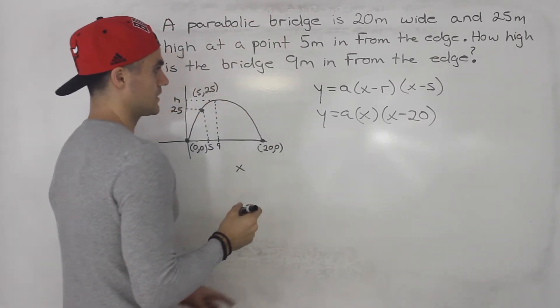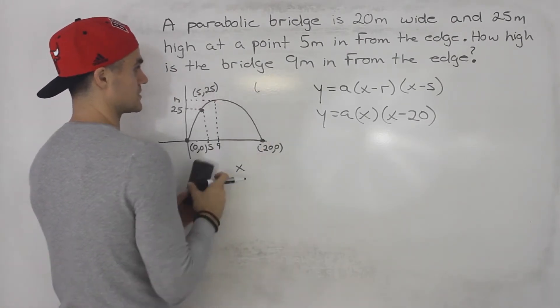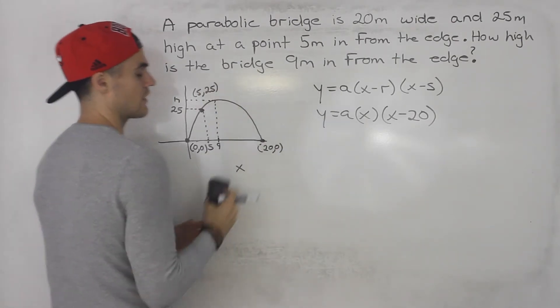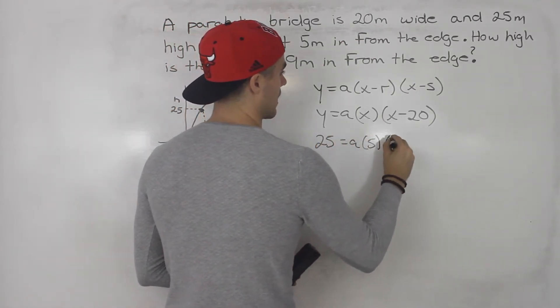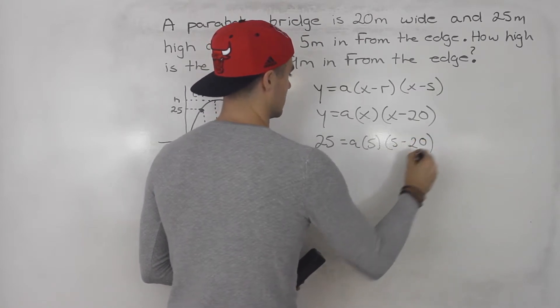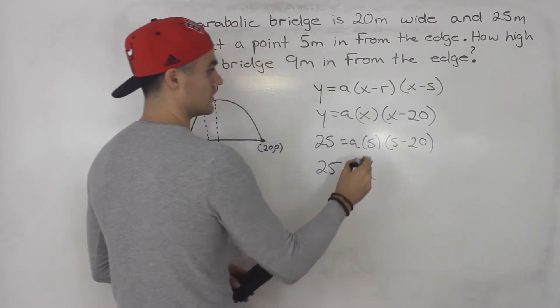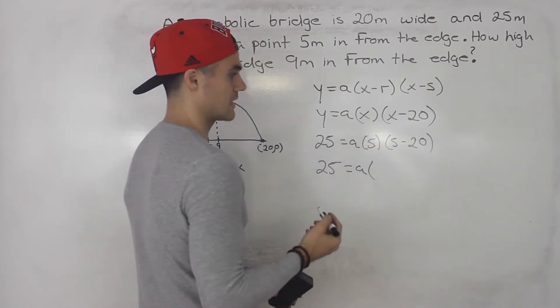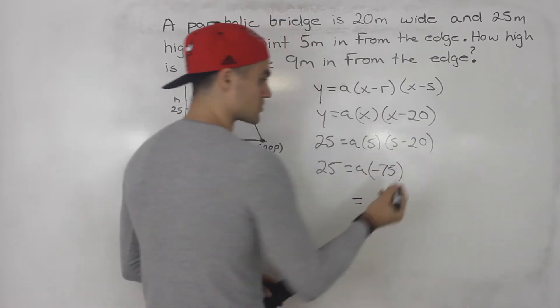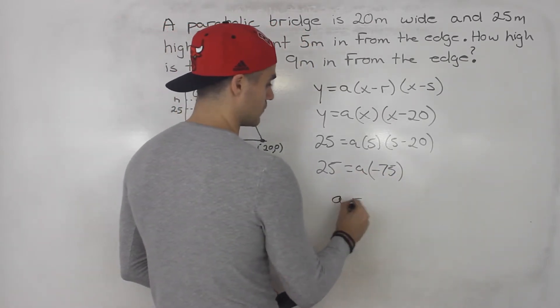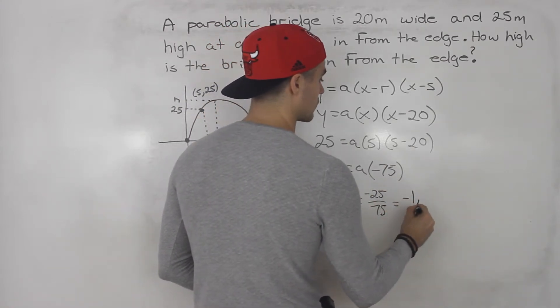And then we could solve for this a value by plugging in the 5 and 25. So we could plug in 25 for y. And we could plug in 5 for x. So we'd have 25 equals a. This would be negative 15 times 5, which would give us negative 75. Divide both sides by negative 75. So the a would be negative 25 over 75, which simplifies to negative 1 over 3.